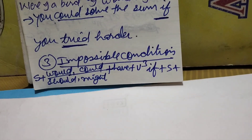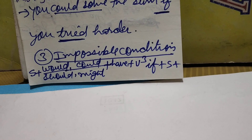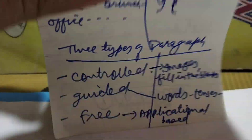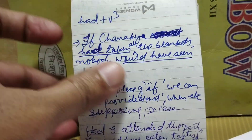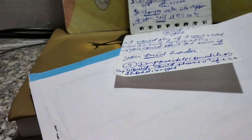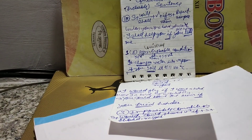In the third condition, called impossible condition, the principal clause contains subject plus would/could/might/should plus have plus V3, and the if-clause contains subject plus had plus V3. Here is an example: if Chanakya had used the blanket, nobody would have seen him. In place of 'if', you can use 'had' also. So these are the three conditions.